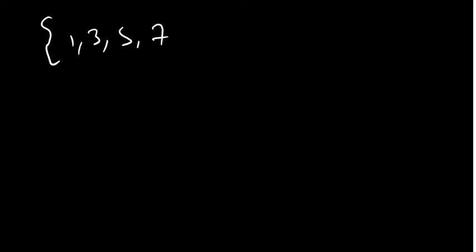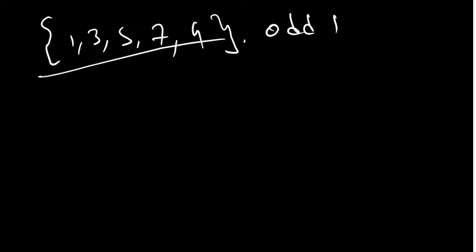Now let's look at a different set: {1, 3, 5, 7, 9}. These are odd numbers. How can we write this in set builder notation? The odd numbers are represented by the symbol capital N (or the odd numbers symbol).